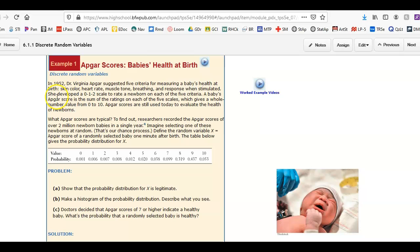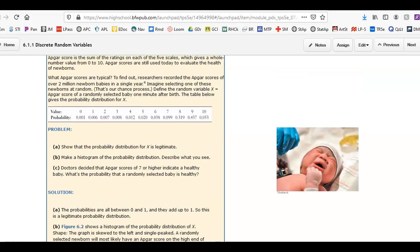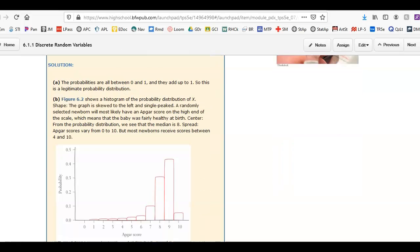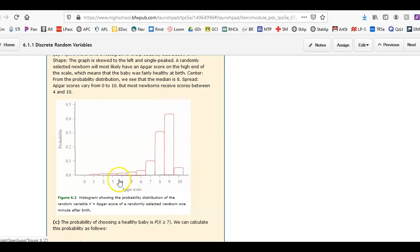So every baby takes this APGAR test when they're first born, and a specific value equates to a specific thing. You can read it in details, but you have the corresponding probabilities. You can't score like a 0.5, a 1.2. It's just an integer score, a whole number score. So this is a discrete random variable, and it just asks you like make a histogram, describe what you see.